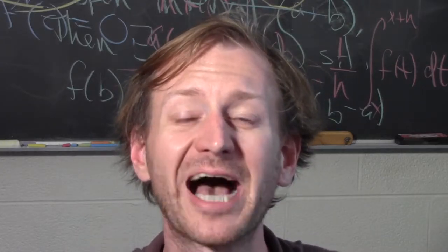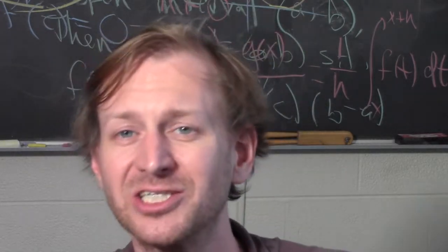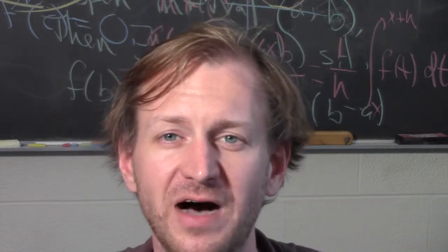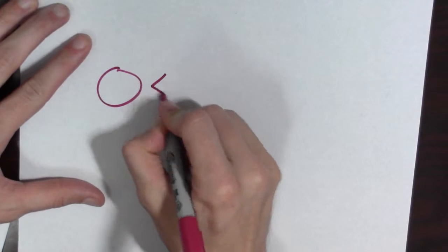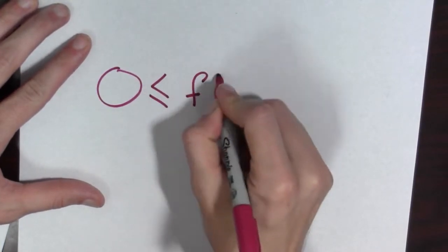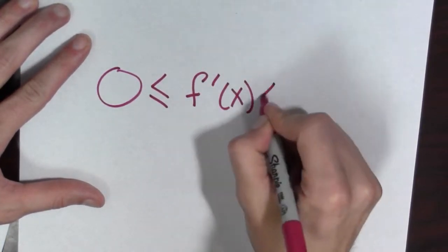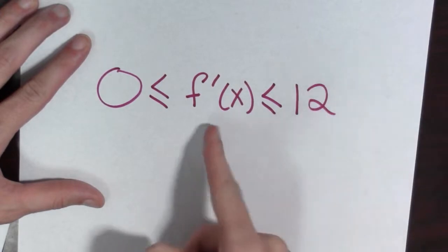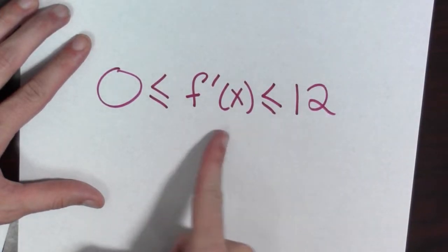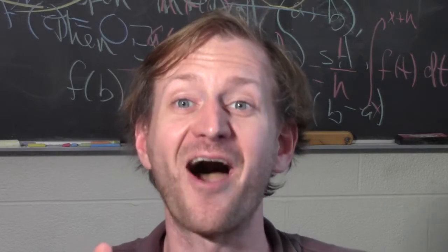Now, suppose I tell you, in addition to knowing that f of 0 equals 5, 0 is less than or equal to f prime of x is less than or equal to 12 for all real x. What can you tell me now?